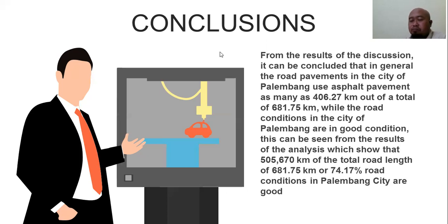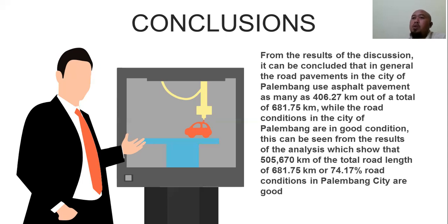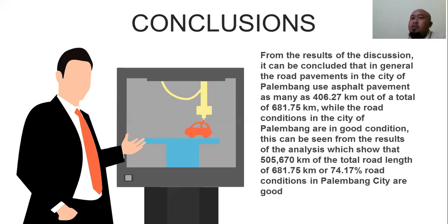We recommend developing a web GIS platform for the road condition map of Palembang city, to make it easier for the public to access this data as open-source information, since the current road map is only available as an offline map.